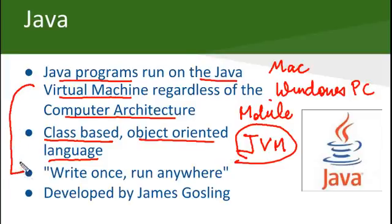And because of this, you can write your code once on a machine, whether it be a Linux machine, Mac, Windows or anything, and you can run it anywhere. And one important thing to know is that Java was developed by James Gosling at Sun Microsystems.